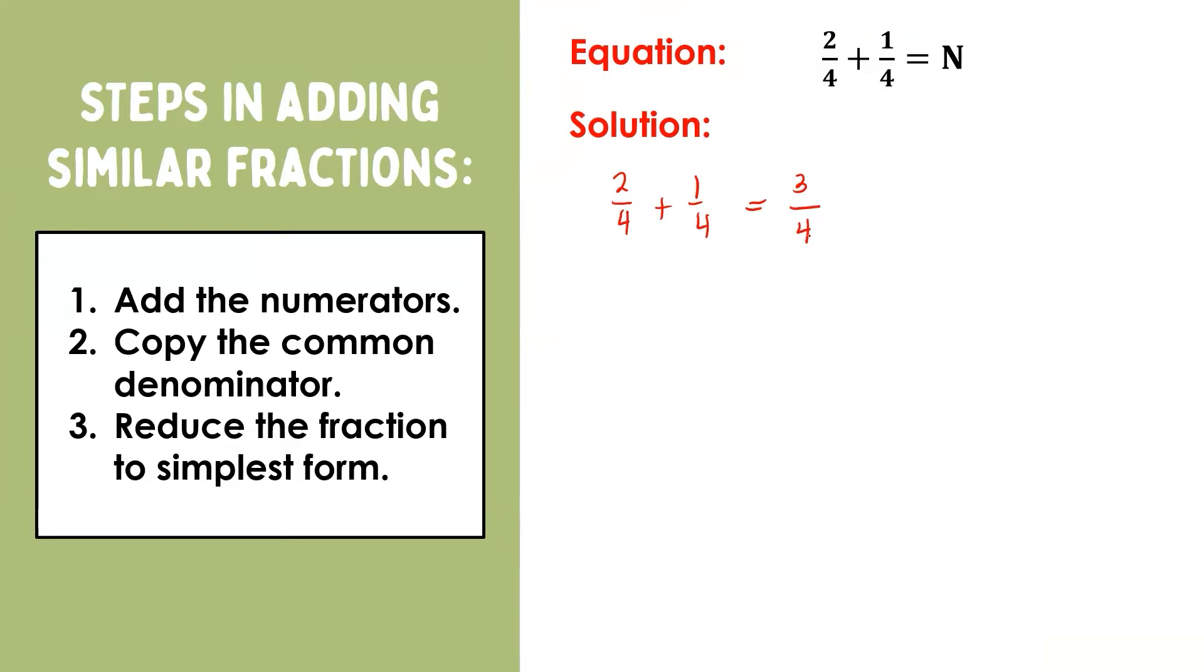For the last step, we need to check if our answer is in simplest form. Using continuous division, let's check if this fraction is already in its simplest form. Think of a number which can divide both 3 and 4 other than 1. Is there any? None. That means 3/4 is already simplified. Therefore, 2/4 + 1/4 = 3/4.